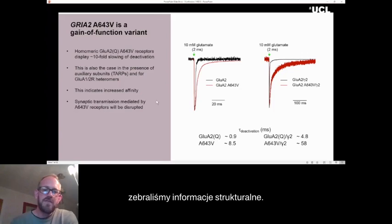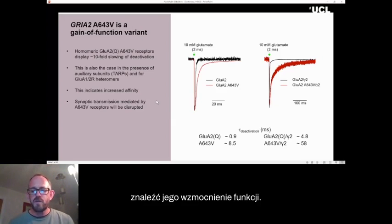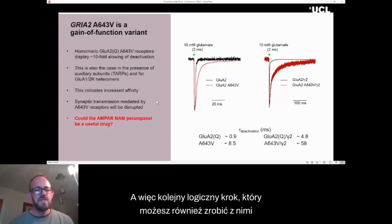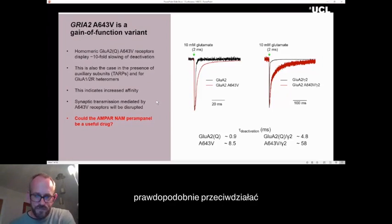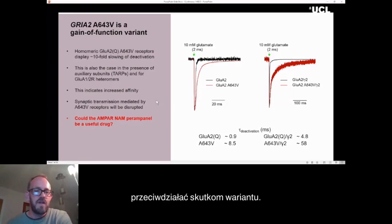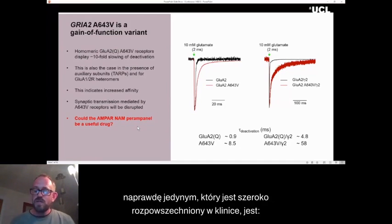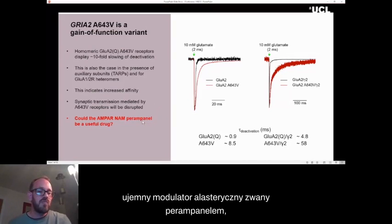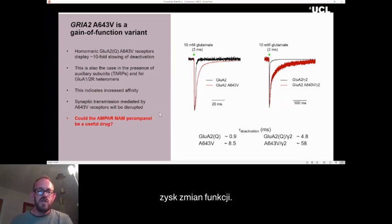Okay, so we've taken the structural information, we've made the gene, we've used the expression system to find that it's gain of function. And so the next logical step that you can also do with these expression systems is to try and find the drug to counteract the effects of the variant. So for AMPA receptors, the only prescribable drug really, the only one that's widely in the clinic, is a negative allosteric modulator called perampanel, which has the potential to deactivate or to counteract the gain of function changes.